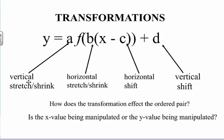Here is a quick tutorial on transformations of functions. We're going to be talking about rigid transformations — vertical and horizontal. When you have a transformation, the key thing to ask yourself is: how does a transformation affect the ordered pair? Because every function is made up of points. They have inputs, which affect the x, and outputs, which affect your y values.